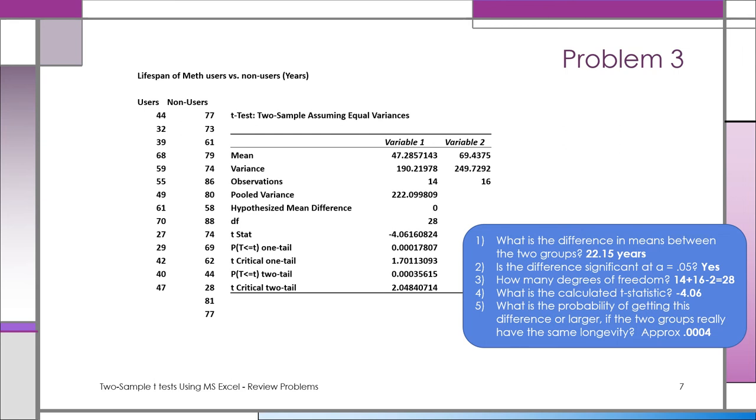The degrees of freedom—it's n1 plus n2 minus 2, and you can read it off the printout directly. It's 28 degrees of freedom. The calculated t-statistic—you see it on the printout: t-stat is minus 4.06. But the key thing is that probability, which you compare with the alpha you're working with. 0.004 is a lot less than 0.05.